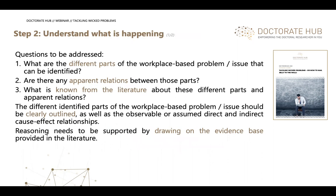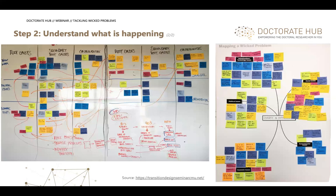Step two: map out and understand what is happening — the different parts of the problem, their apparent relations, and what is known from the literature about those parts and relations. Literature and practice go hand in hand: literature guides you and practice provides further evidence. Working on both ends in parallel is advisable. Mapping it out — either analog or digital — under involvement of stakeholders at the right point in time is recommended. Note that stakeholders may not come in as early as step two, or it may not be all types of stakeholders.